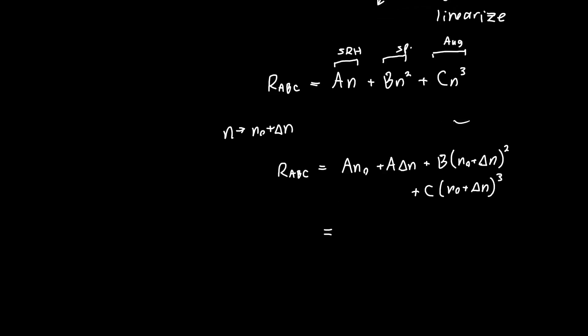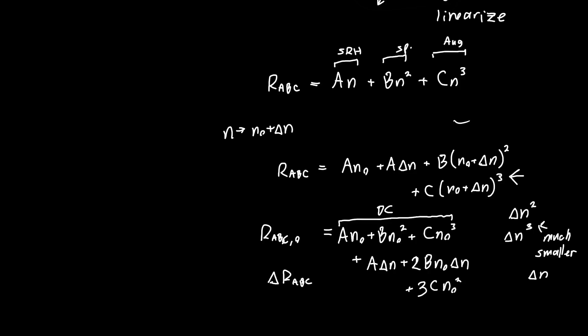Once you do that, if you ignore everything involving delta n squared and delta n cubed, because these are much smaller than all the other terms, you'll get that the ABC recombination is just a n naught plus b n naught squared plus c n naught cubed. This is our DC term, so r ABC naught, but we're interested in delta r ABC. We need to add in our other terms in terms of delta n, and you'll get a delta n plus 2b n naught delta n plus 3c n naught squared delta n. This is our total ABC recombination, so our delta r ABC recombination is just this term here, and it's linearized so it's now just in terms of delta n.